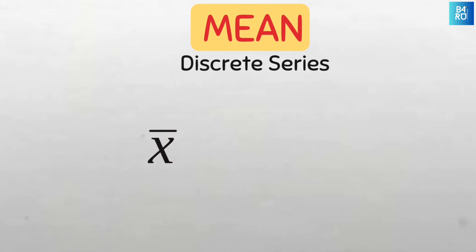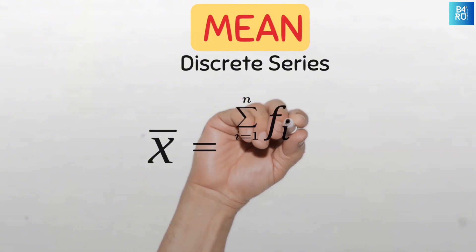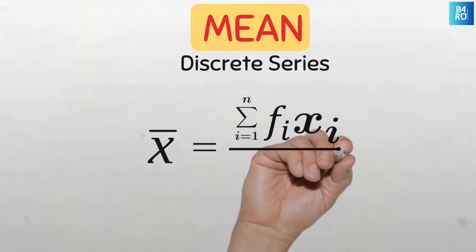The mean of a discrete series dataset is given by the formula: x̄ equals sigma from i equals 1 to n of f sub i multiplied by x sub i, divided by sigma f sub i. This means the sum of the product